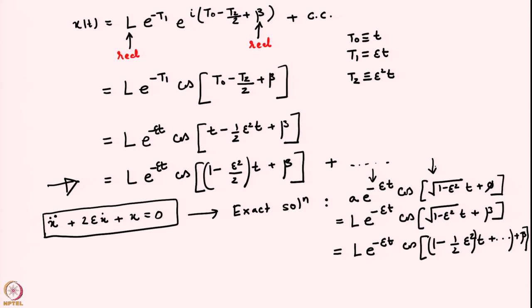What multiple scales does is keep e^(−εt) intact at the first-order correction and then expands the frequency, saying √(1 − ε²) ≈ 1 − ε²/2 for small ε. Going to higher orders of epsilon and adding more time scales (T3 = ε³t, etc.) recovers more and more corrections, giving a progressively better approximation of the exact frequency. We will continue our discussion of multiple scales, particularly because it is frequently used in analyzing interfacial waves.